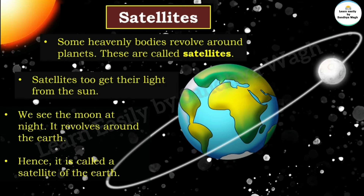Our Earth rotates on its own axis — that is called rotation. And it revolves around the sun — that is called revolution. Around our Earth, there is also a satellite revolving, which is the natural satellite: the moon. When we look at the sky at night, we see the moon. The moon revolves around our Earth.